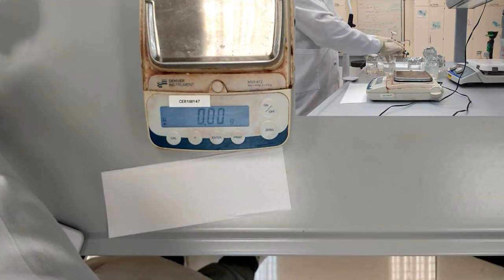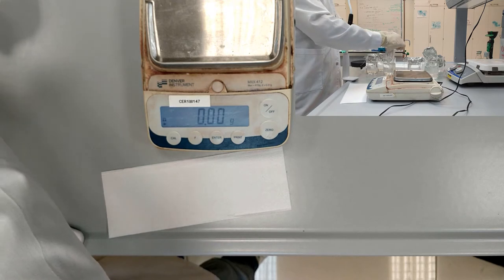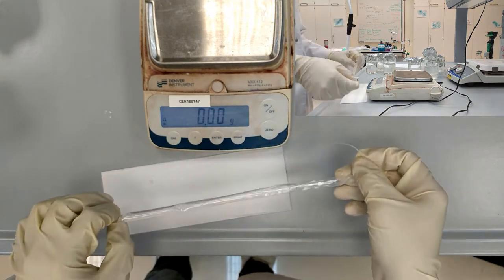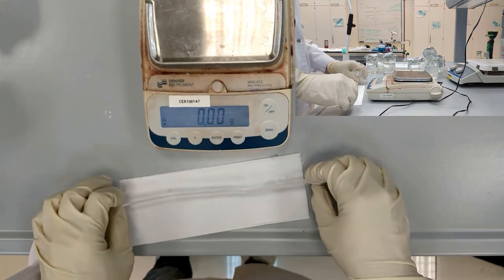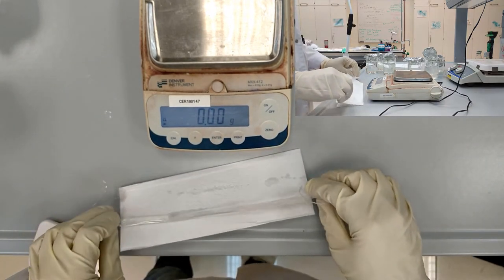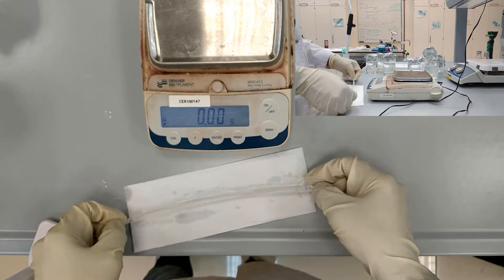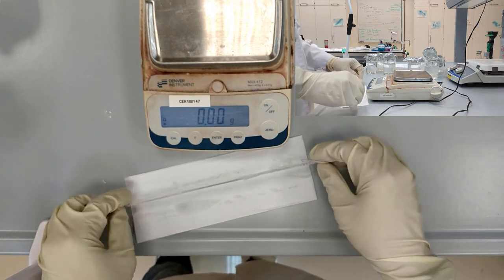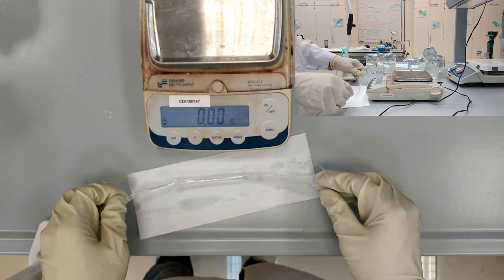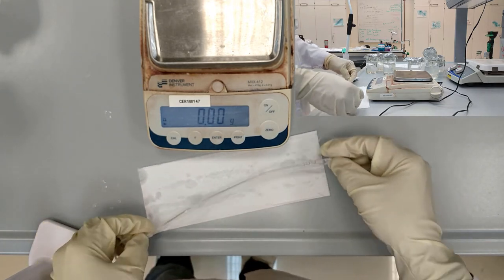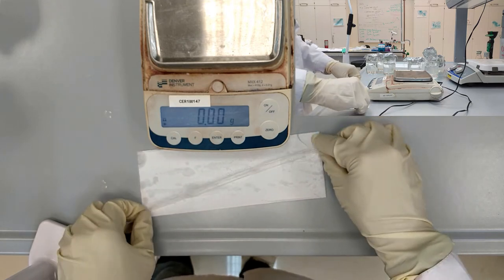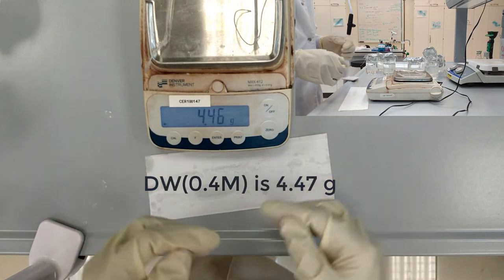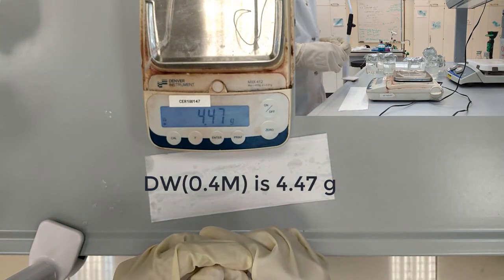Then we take the 0.4 molar concentrated glucose. After drying, we put the dialysis tube on the scales. So the mass is 4.47 grams.